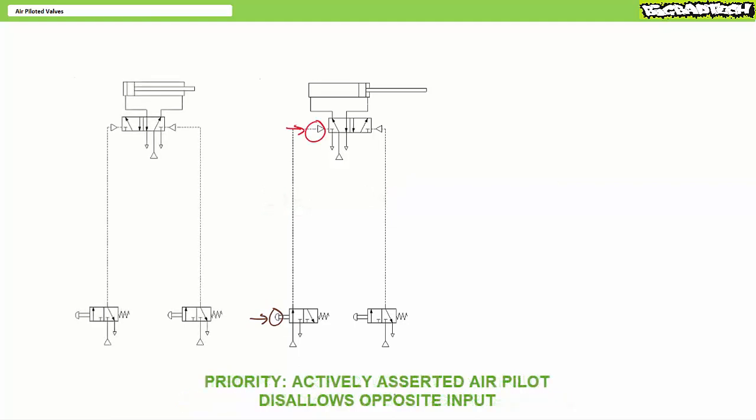Another feature of air piloted valves can be demonstrated with this application: that of priority. The only way to shift this double air piloted valve to the opposite position is to assert the opposite air pilot. This isn't entirely true, because it neglects to mention that one must also exhaust the original air pilot to allow it to shift.